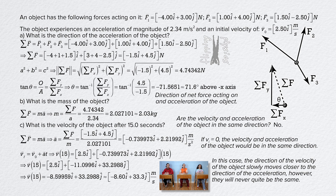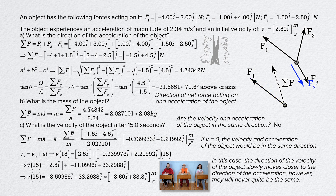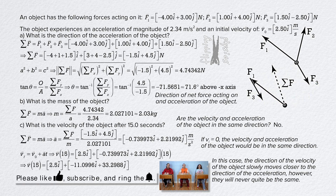One more quick thing: the net force we solved for is in fact the sum of the three forces. We can show that using tip-to-tail vector addition — take Force 1, add Force 3, then add Force 2. The order does not matter. You can see that the net force acting on the object is 4.74 newtons at 71.6 degrees above the negative x-axis, or in unit vector form: negative 1.5i plus 4.5j newtons.